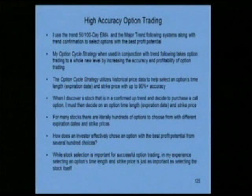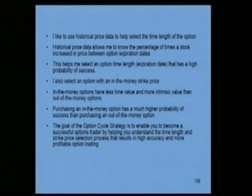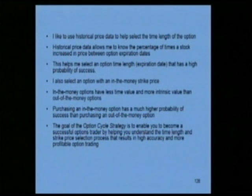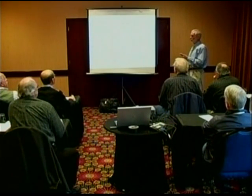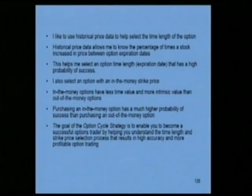Let's go through the process of selecting the expiration month and the strike price. For selecting the time length or the expiration, I like to use historical price data that tells me the percentage of times the stock increased between option expiration days. If I see a stock that on a three-month option cycle is up 80% of the time, that would be a high level of accuracy and I'd want to use that time length. If the historical testing shows the stock is only up 65% or 70% of the time, I wouldn't use that option cycle because that's not a high enough percentage.